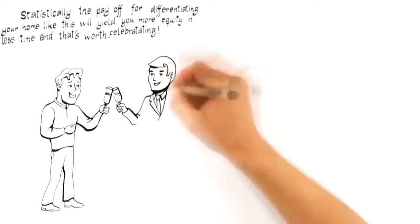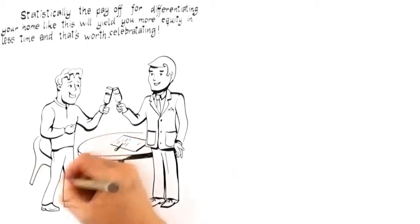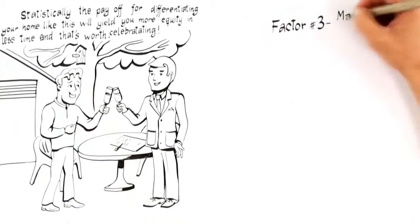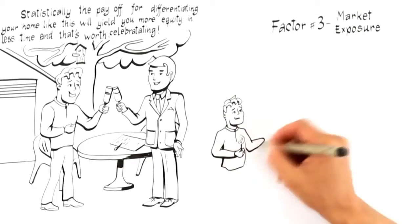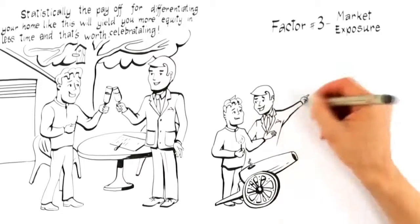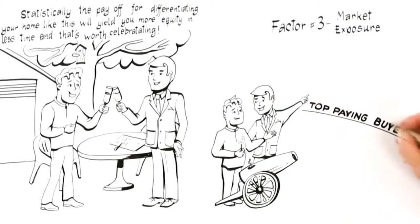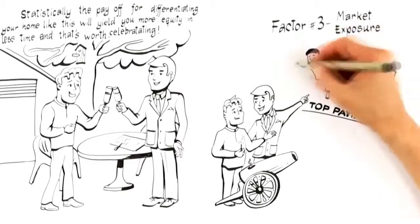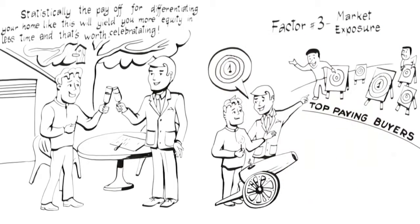Moving on to factor number three, market exposure. Once your home has been differentiated to target top paying buyers, like a loaded cannonball, it's ready to fire. But this next factor ensures when you launch your home onto the market, it's aimed at the right target. This requires you to be especially careful when selecting a professional. Here's why.